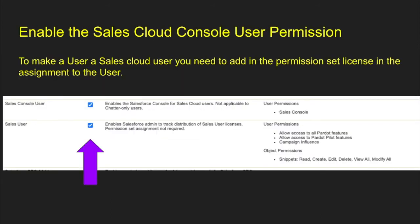First things first, you enable the Sales Cloud user permission. You need to go to that user and enable those permissions for them. This grants them access to a lot of those sales things that they're going to need to do — it's a permission license you need to assign to the user. The Sales Cloud user grants access to the Sales Cloud. The Sales user used for campaign influence is a big one. And if you're going to use Pardot, you can gain access to those Pardot features and pilots as well.